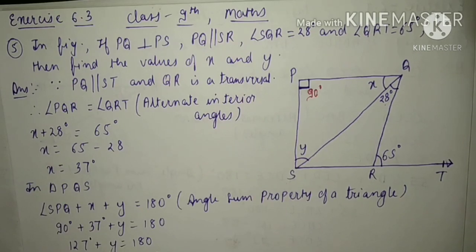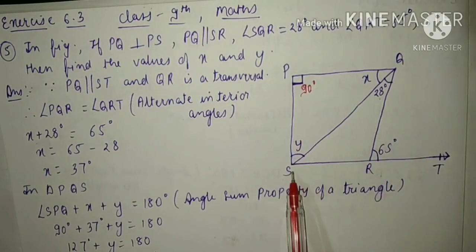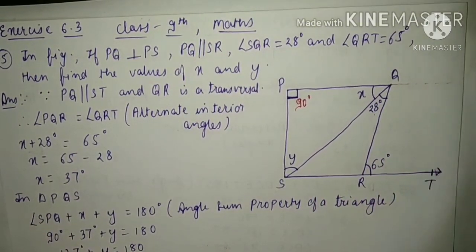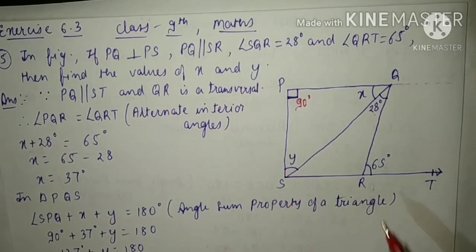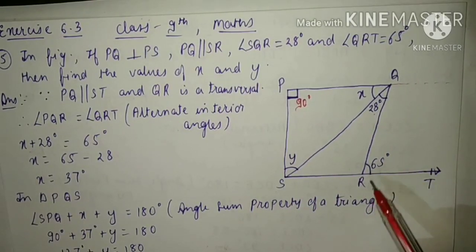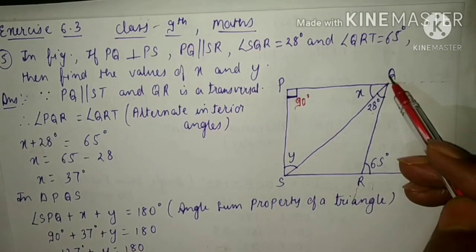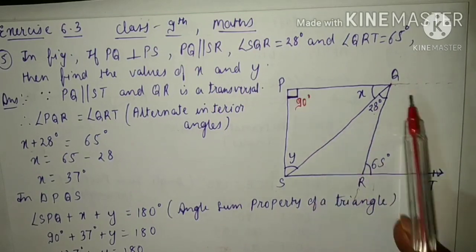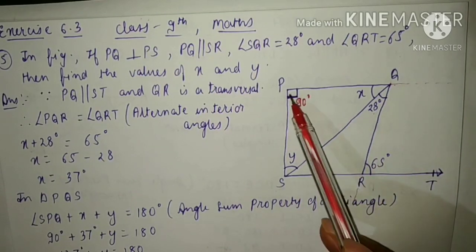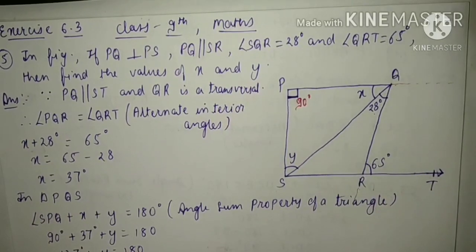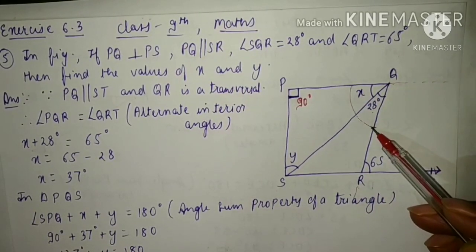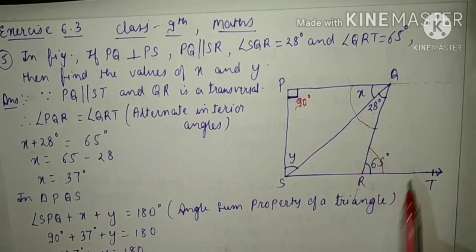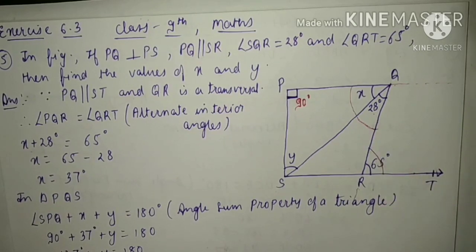Since PQ is parallel to SR, extend PQ. Now QR is a transversal intersecting both the parallel lines. So these two angles will be alternate interior angles — this angle and this angle are alternate interior angles, so they will be equal.